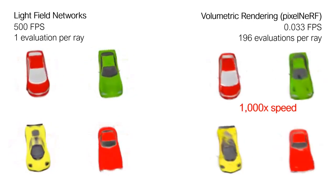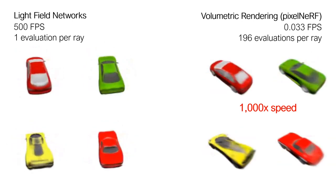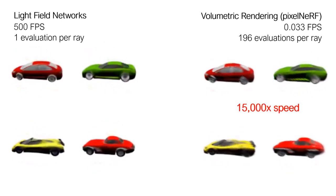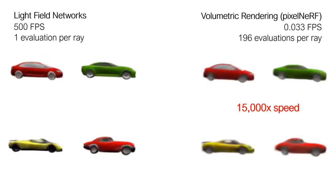Unlike methods which speed up volumetric rendering using discrete data structures like octrees and voxel grids, LFNs are capable of generalization and single-shot reconstruction, as we will show later in this video.